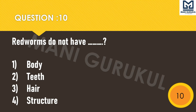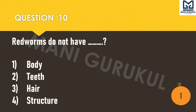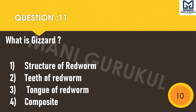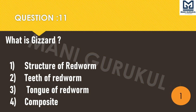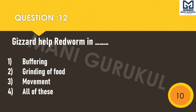Question 10: Red worms do not have dash. First: body. Second: teeth. Third: hair. Fourth: structure. Question 11 relates to the tongue and grinding of red worms. Question 12: The gizzard helps red worms in dash. First: buffering. Second: grinding of food. Third: movement. Fourth: all of these.